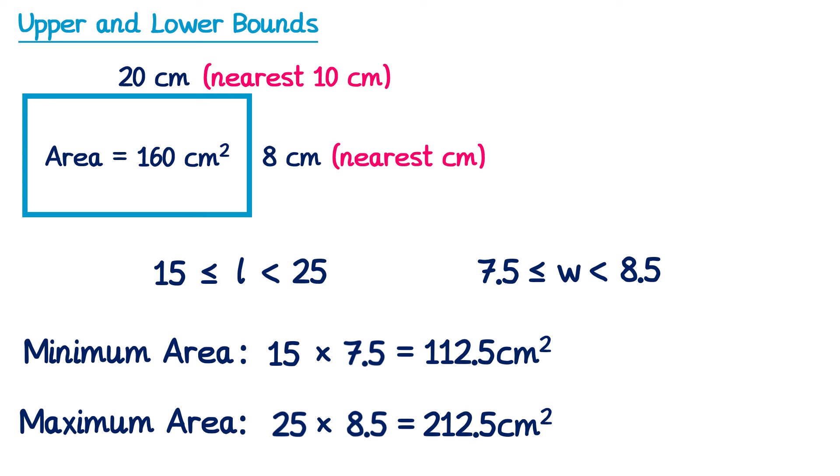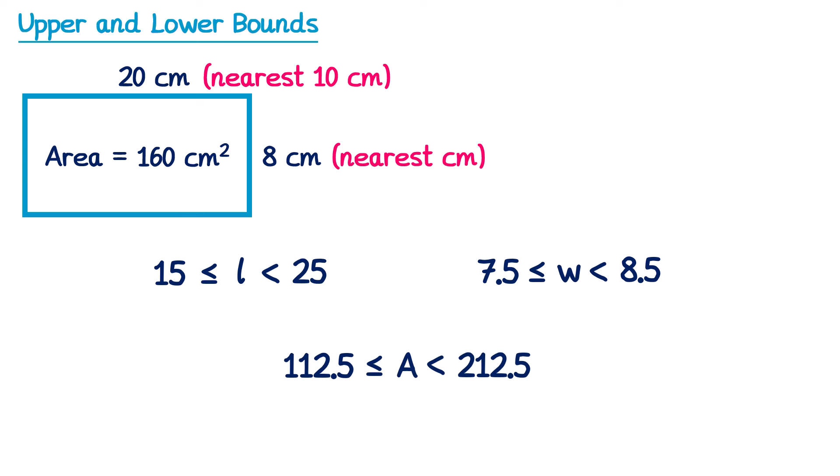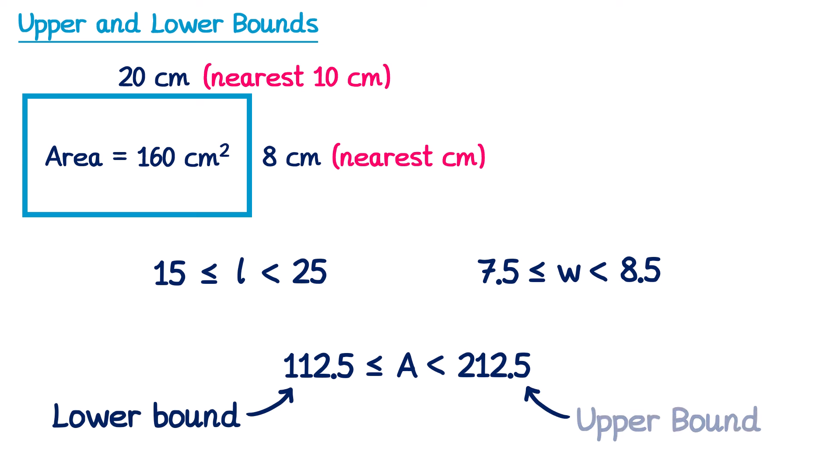Now that we know the minimum and maximum possible areas, we could write these in an error interval for the area itself: the area must be between 112.5 and 212.5. We call 112.5 the lower bound and 212.5 the upper bound. What's really important is that you work out the error intervals for the length and the width first, and then multiply those. Some people multiply 20 by 8 to get 160, then try to work out the error interval from that — but that's not the correct approach.